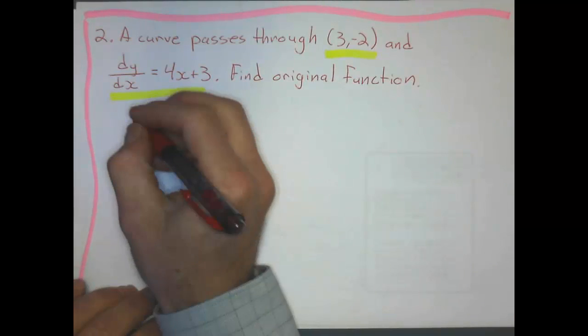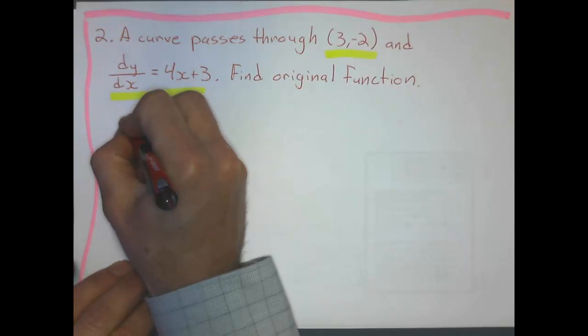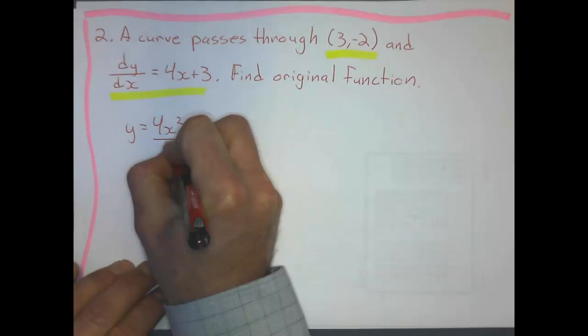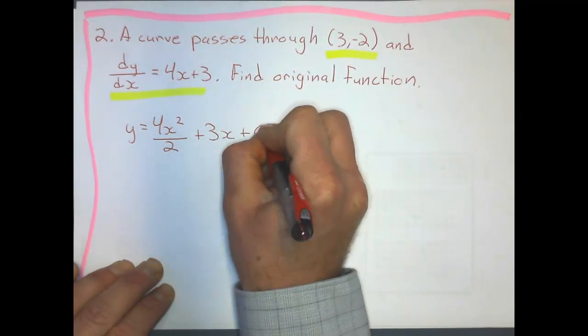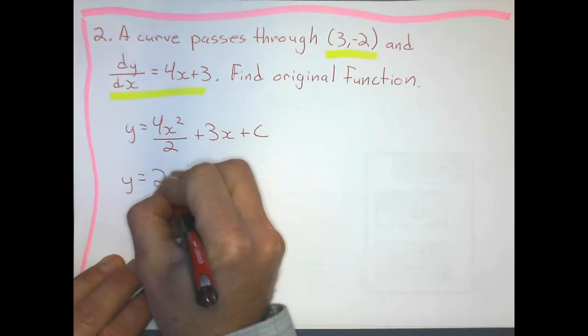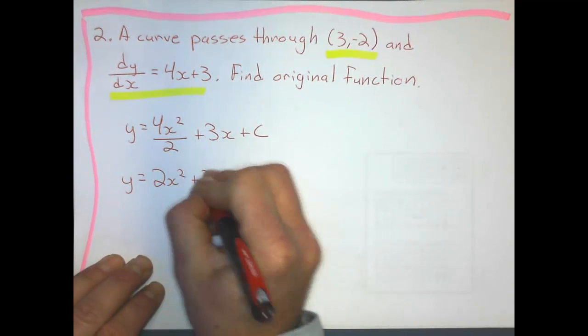Let's do that first. I'll anti-differentiate this. This is pretty easy: 4x² over 2 plus 3x plus that constant. And I'll simplify that as 2x²+3x+c.